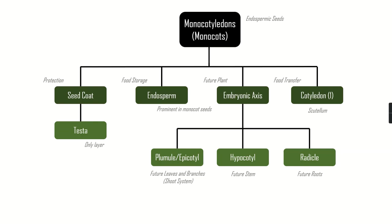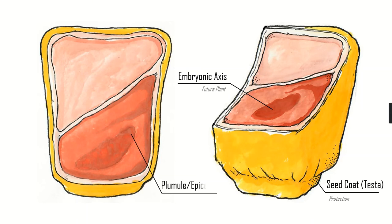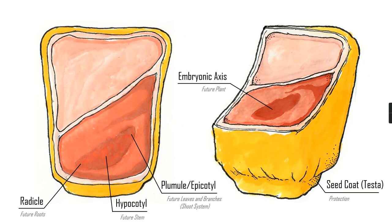Now let's go back to our illustrations and put these names on them. First we have the seed coat — the testa — that offers protection. Then you have the embryonic axis, which is the future plant. In a monocot, because you don't have the same symmetry as in dicot seeds, it's not a perfect division, but the embryonic axis name is kept so you can relate to it. It has the same parts, just not as visible and developed as in a dicot seed. At the top you have the plumule and epicotyl — the future leaves and branches. At the bottom you have the radicle — the future roots. And in the middle you have the hypocotyl — the future stem.